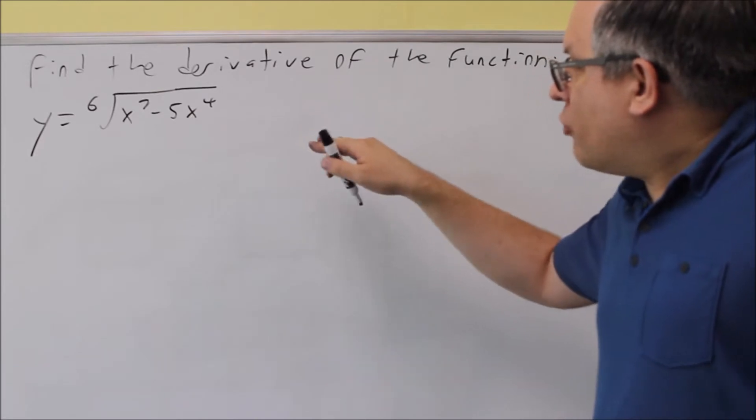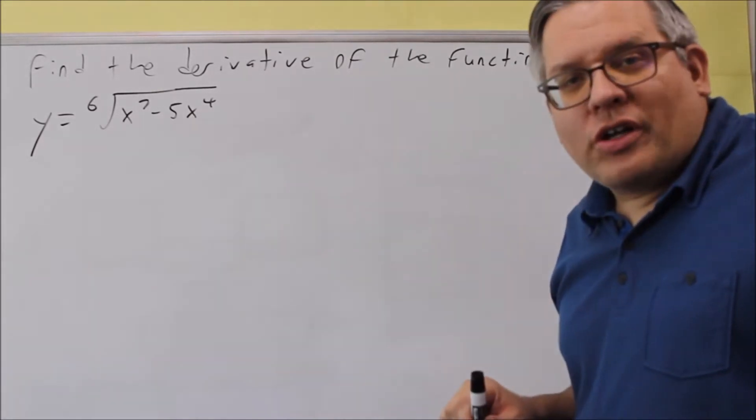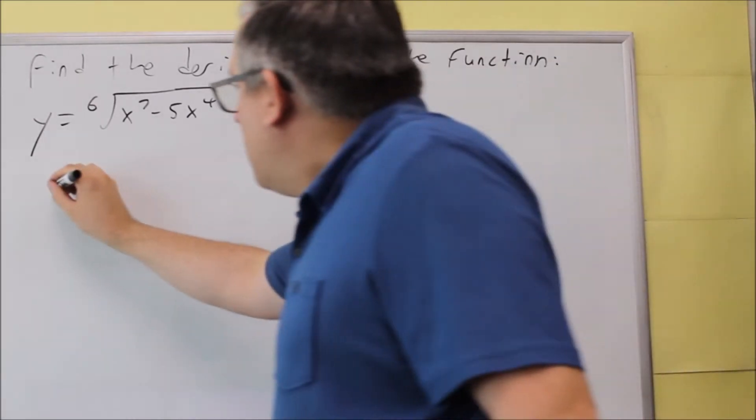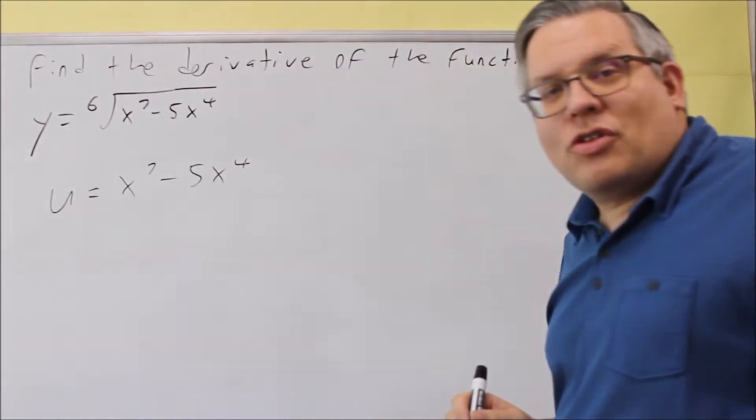However, we still can for this one. Now the u is always going to be your inside function. So in this case, u equals x to the seventh minus 5x to the fourth.